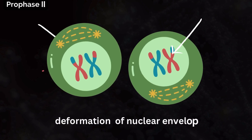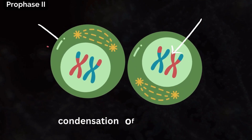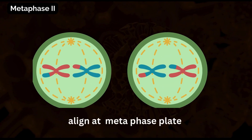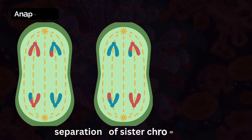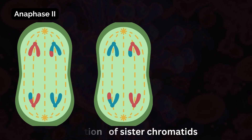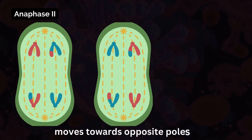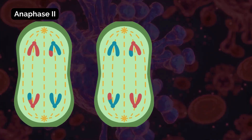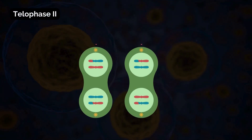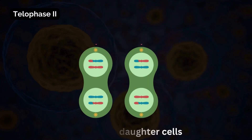Prophase 2 involves the reformation of the nuclear envelope and the condensation of chromosomes, followed by Metaphase 2, where chromosomes align at the metaphase plate. Anaphase 2 sees the separation of sister chromatids, which move towards opposite poles of the cell, facilitated by spindle fibers attached to the centromere. Telophase 2 and Cytokinesis 2 conclude meiosis, resulting in four haploid daughter cells, each with a unique combination of genetic material due to independent assortment of chromosomes and crossing over during Prophase 1.